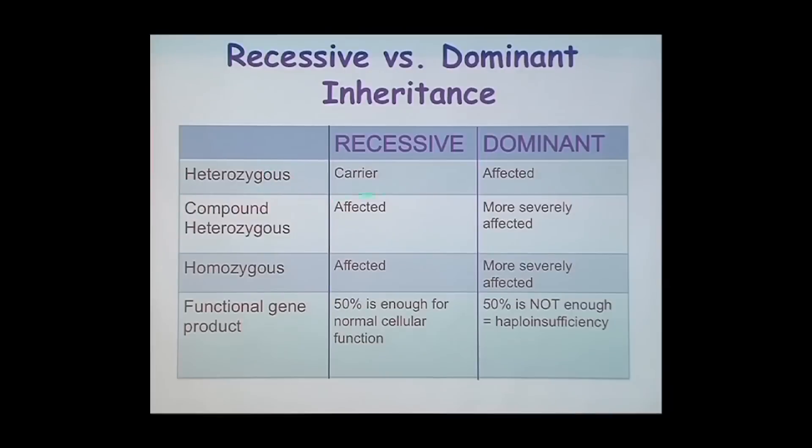Remember, we have two copies of every gene. So for a recessive disease, you have to have a mutation in both of those copies of the gene — the one you got from your mom and the one you got from your dad. Now, if you have one normal copy and one mutant copy, you're called heterozygous, and then you're a carrier. So you are normal, you don't have that disease, but you are carrying that mutation and you can pass it on to your offspring, to your children.